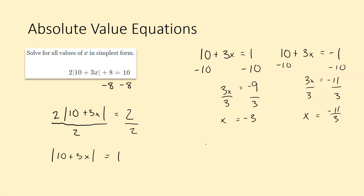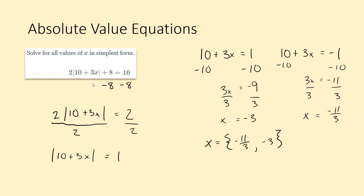So we're going to leave our answer as x equals negative 11 over 3 and negative 3. Negative 11 over 3 is just a little bit less than negative 3, so I put it in front. The key difference with this problem is we did not set this equal to 10 and negative 10 right away — we had to do some solving first to get the absolute value by itself. We subtracted the 8 and then divided by 2, and then we set 10 plus 3x equal to 1 and negative 1.